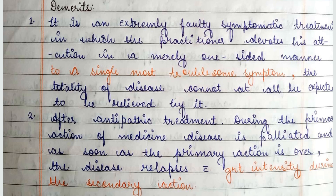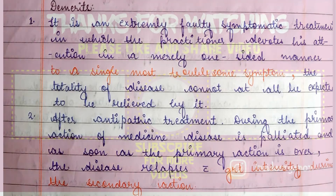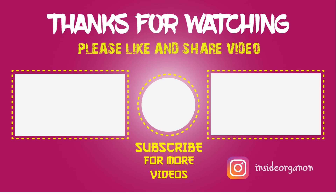Friends, these were the two examples of antipathy. You can refer to page numbers 99 to 101; I am sure that will be helpful. This is all about today's lecture. I hope I have made everyone understand. If you have any doubt, you can ask me in the comment section. Like this video and share it with your friends. Inside Organon is also on Instagram — the link is in the description below. Thank you.